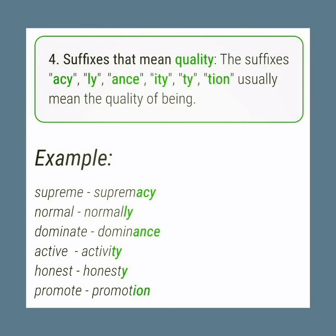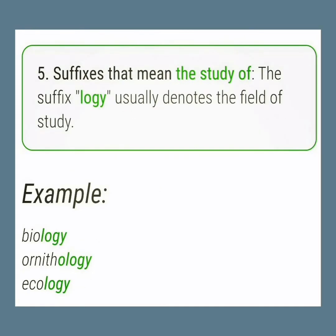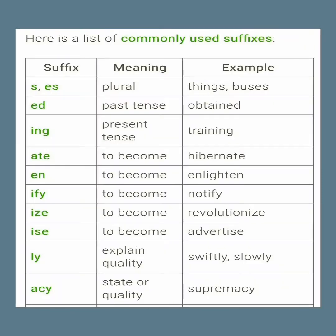Suffixes that mean 'quality': the suffixes -acy, -ly, -ance, -ity, -ty, -tion usually mean 'the quality of being'. Examples: supreme → supremacy, normal → normally, dominate → dominance, active → activity, honest → honesty, promote → promotion. Suffixes that mean 'the study of': the suffix -ology usually denotes the field of study. Examples: biology, ornithology, ecology.